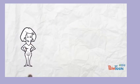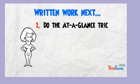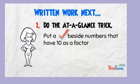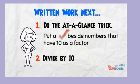Your teacher will give you written work to show your understanding. First, do the at-a-glance trick: look at each number and the digit in the ones column tells you what to do. Put a check mark beside each number that has 10 as a factor. After your predictions have been checked, go ahead and divide by 10.